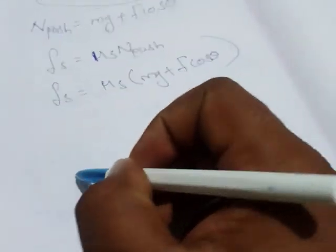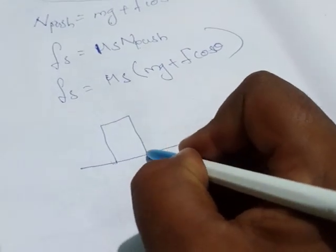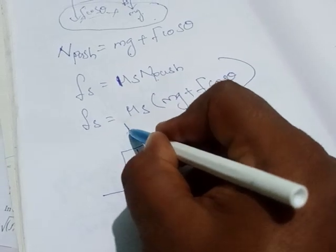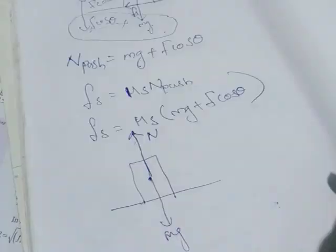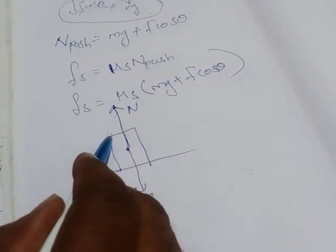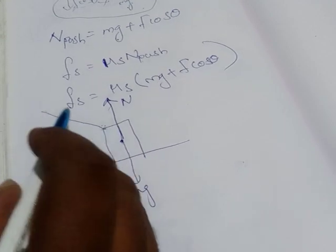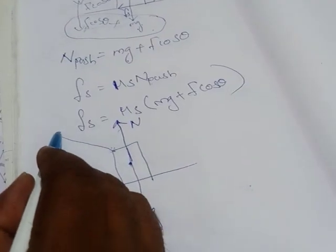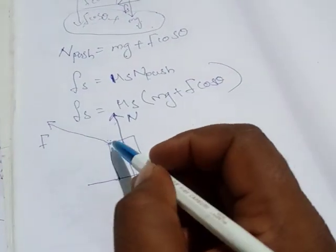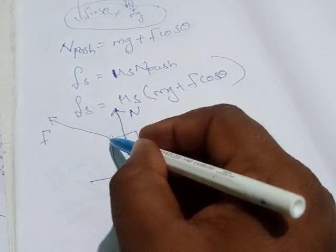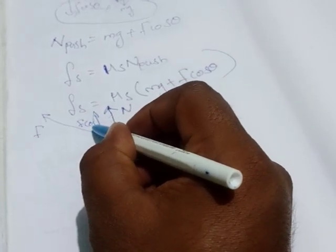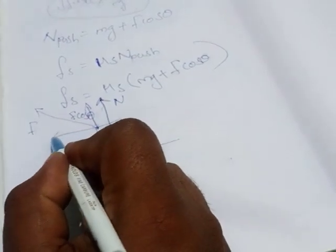Now consider the same object, with Mg acting downward and normal force acting upward. When pulling the object, you apply force in the backward direction at an angle theta. The force splits into F cos theta (perpendicular) and F sin theta (parallel).